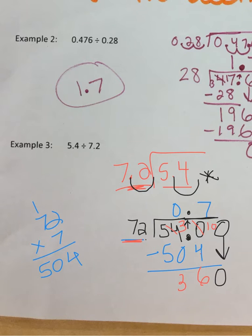So 7, 14, 21, 28, 35. That gets me pretty close, 5 times. So I'm going to guess that it's a 5. But again, I can erase if I don't get it right.